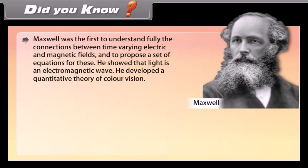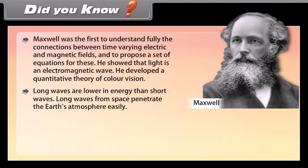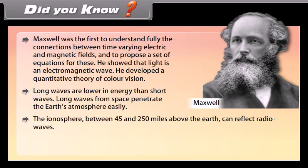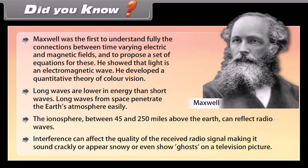Did you know? Maxwell was the first to understand fully the connections between time-varying electric and magnetic fields and to propose a set of equations for these. He showed that light is an electromagnetic wave. He developed a quantitative theory of color vision. Long waves are lower in energy than short waves. Long waves from space penetrate the earth's atmosphere easily. The ionosphere between 45 and 250 miles above the earth can reflect radio waves. Interference can affect the quality of the received radio signal making it sound crackly or appear snowy or even show ghosts on a television picture.